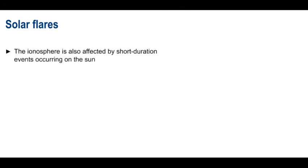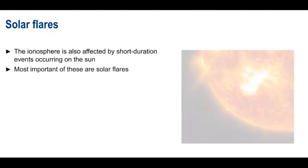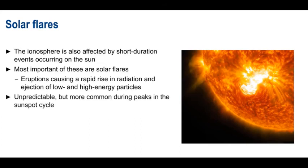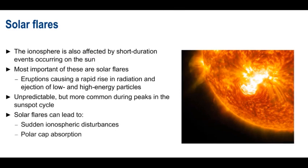Sunspot number and solar flux index are valuable measures of longer-term variations in solar radiation. The ionosphere is also affected by shorter duration events occurring on the sun. The most important of these are solar flares, which are a type of eruption on the surface of the sun. Solar flares cause a rapid rise in both X-ray and ultraviolet radiation, as well as the ejection of both low- and high-energy particles. Solar flares are essentially unpredictable, but do occur more commonly during peaks in the 11-year solar cycle. Solar flares have a significant effect on HF propagation, because they can lead to sudden ionospheric disturbances, polar cap absorption, as well as geomagnetic and ionospheric storms.